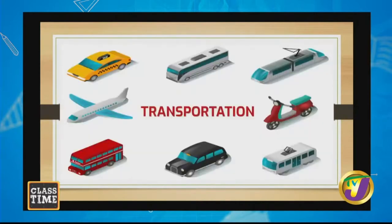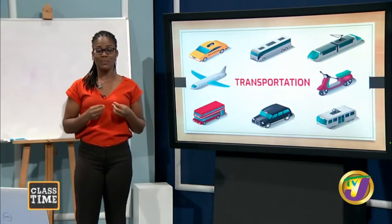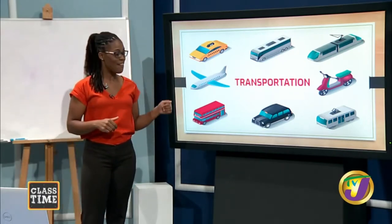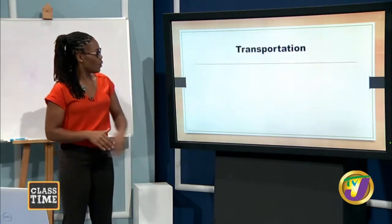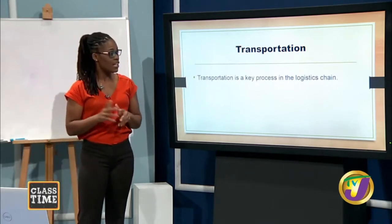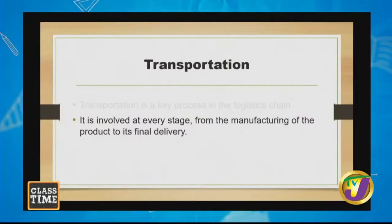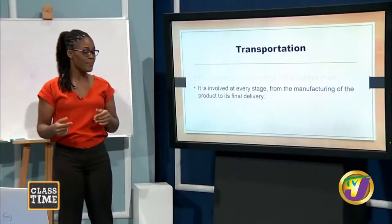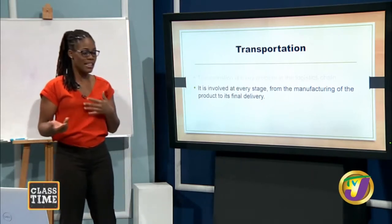Transportation. Most people, when they hear about logistics, think transportation. But logistics is much more than just transportation. However, transportation is a crucial factor in an efficient logistics and supply chain system. It is involved at every stage — from the manufacturing of the product to its final delivery. Transportation is needed to take raw materials into the factory for manufacturing, and also to take finished goods to the final consumer or to intermediaries such as wholesalers and retailers. Transportation is also useful to take workers to and from work.